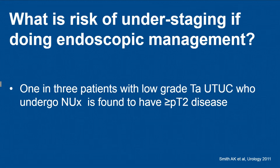There is a significant risk of understaging with endoscopic management — one in three patients with low-grade Ta disease who undergo nephroureterectomy will have muscle-invasive disease. We always need to consider the risk of undergrading and understaging. However, these typically will be larger tumors, which is why they're undergoing nephroureterectomy, so it should not deter us from doing renal preservation.